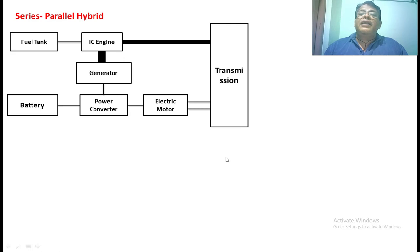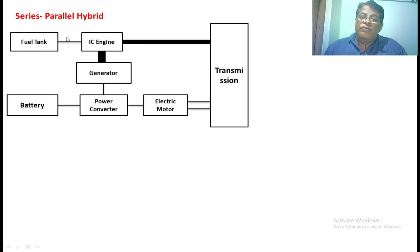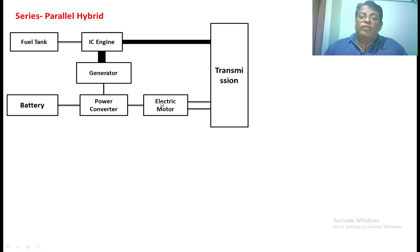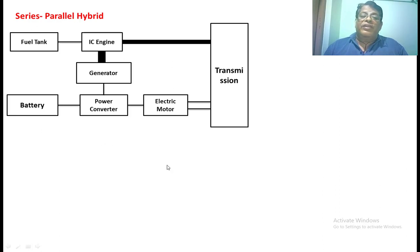The third architecture is the series-parallel hybrid vehicle. Here we have the fuel tank, IC engine, generator, power converter, motor, and battery. The IC engine gives mechanical output directly connected as in a parallel connection. Moreover, we can get the series connection also — the IC engine connects to the generator, and the generator and battery connect to the power converter, which gives power to the motor, which then delivers mechanical power to the vehicle. In this configuration, we can operate as a series hybrid vehicle or as a parallel hybrid vehicle — both options are available.